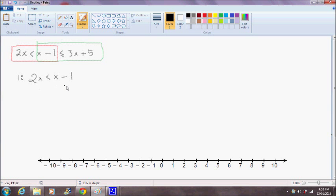So I'm going to isolate the x on the left-hand side and put the solution on the right-hand side. I'm going to take away an x from both sides of the equation. So that will leave me with 2x minus x is less than minus 1, which implies that x is less than minus 1.